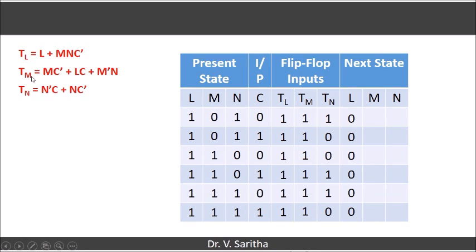Now in the case of M, that is Tm, it is MC bar plus LC plus M bar N. We get Tm as 1 here and because Tm is 1, it is the complement of present state M to get the next state M actually.